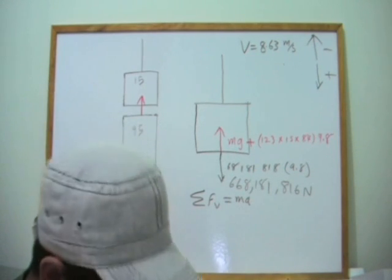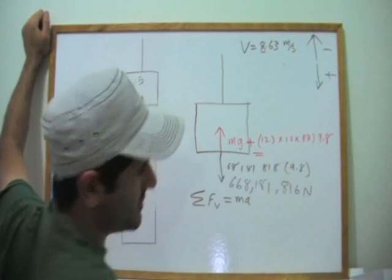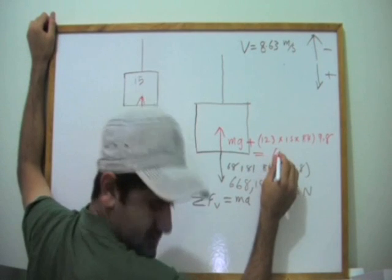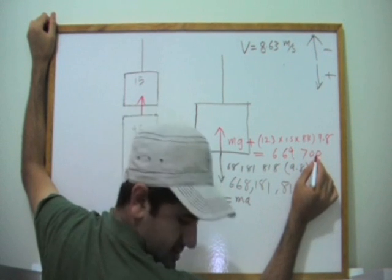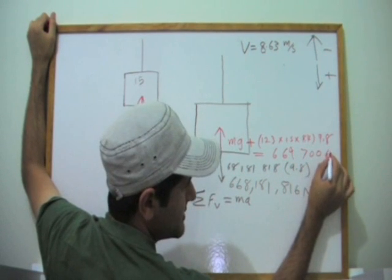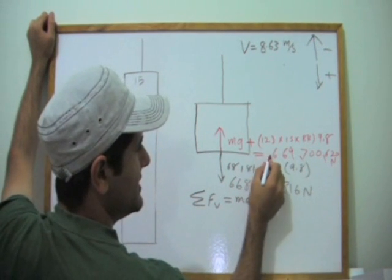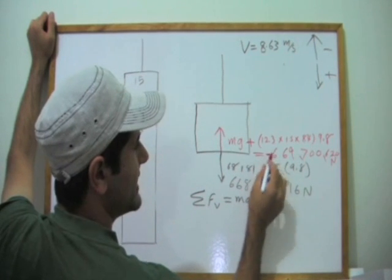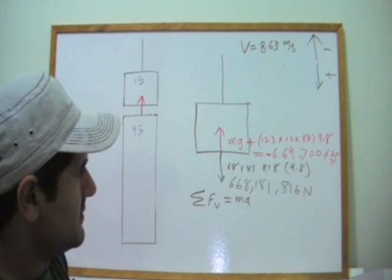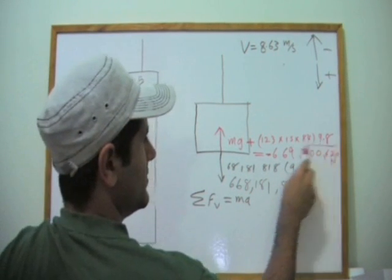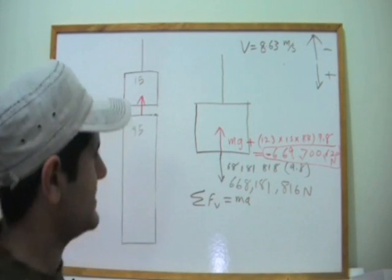So the weight of this block is 668,000,181,816 newtons. Now, this one here, the resistance force will equal 669,700,000 and 620 newtons. Now, this is going to be negative because it will be acting upwards. It's the resistance from this structure.